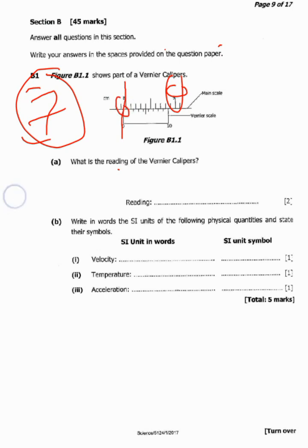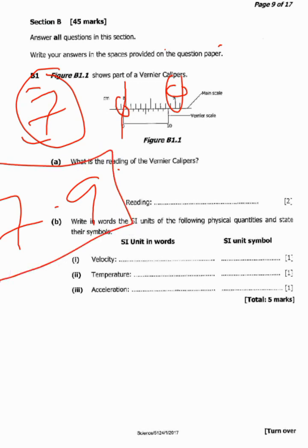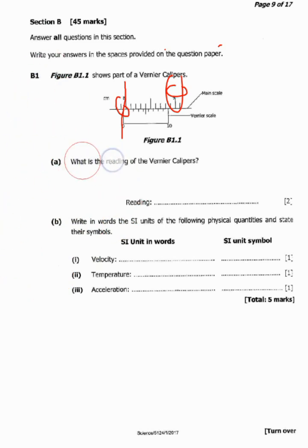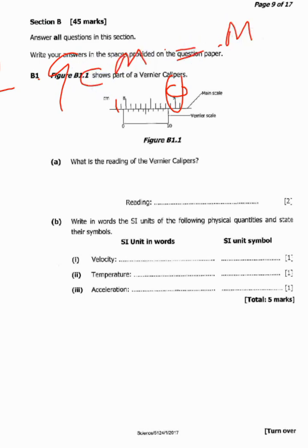Since 7.9 is the last digit we are able to see before the 8, and the Vernier scale starts after that 7.9, the reading we are going to get from the main scale is 7.9 centimeters. I hope you've tried to analyze along with me and understand the kind of analysis we've employed to get that figure.